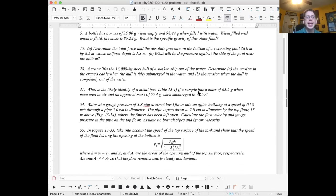The next question is number 28. A crane lifts the 16,000 kilogram steel hull of a sunken ship out of the water. Determine A, the tension in the crane's cable when the hull is fully submerged in the water, and B, the tension when the hull is completely out of the water. Part B is simpler to answer. It's simply the weight of the hull. Part A is the weight of the hull minus the buoyant force acting on the hull. That's the density of the water times G times the volume of the hull. You have enough information to figure out the volume of the hull.